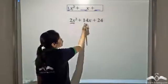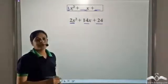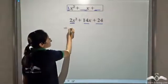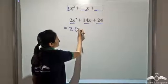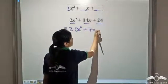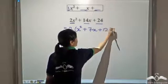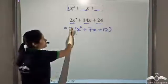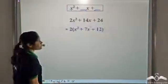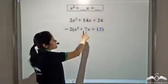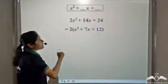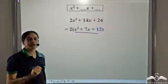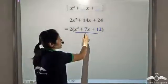Here, 2 is a common factor of all three terms of this expression. So we can write it as 2 into (x² + 7x + 12). We have taken 2 as the common factor from this expression. Now this is in the form of x² + something, and we try to factorize it using the method we had learnt earlier.